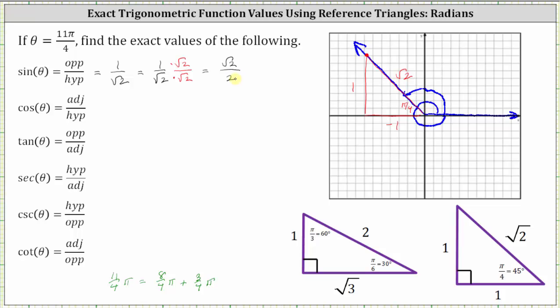The cosine function value is equal to the ratio of the adjacent side to the hypotenuse. Going back to the reference triangle, the ratio of the adjacent side to the hypotenuse is negative one divided by square root two. Rationalizing the denominator gives us negative square root two divided by two.